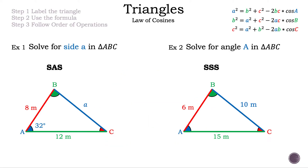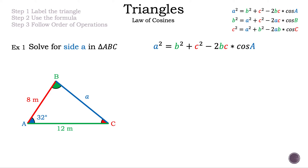Now let's take a look at the examples in today's video. For example 1, the steps are: Step 1 — label the triangle; Step 2 — use the formula; Step 3 — follow order of operations. The question asks us to solve for side A in triangle ABC. The formula we'll use is: A² = B² + C² − 2BC·cos(A).